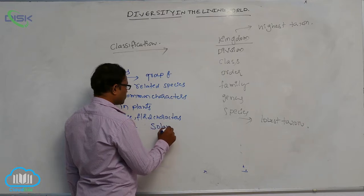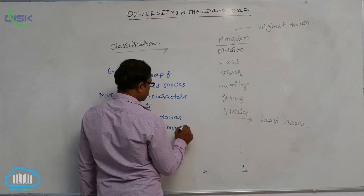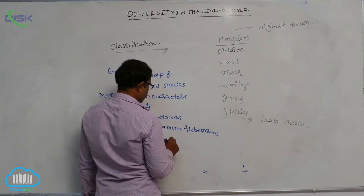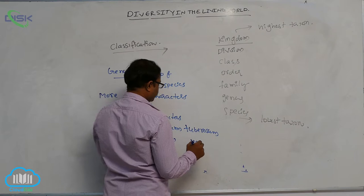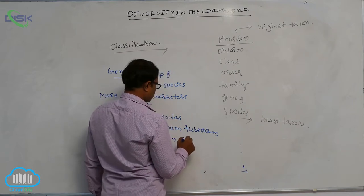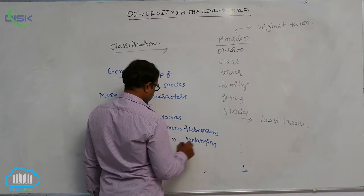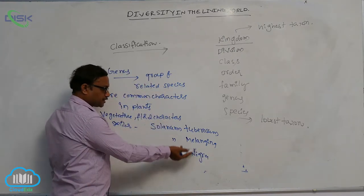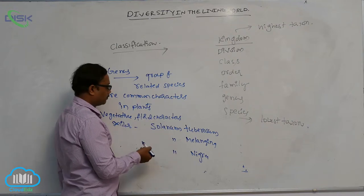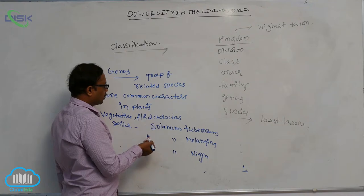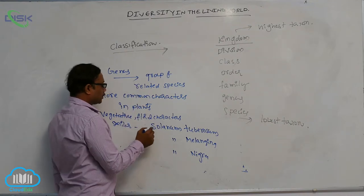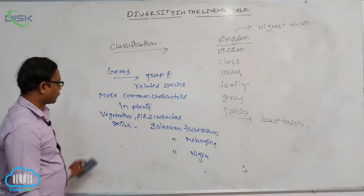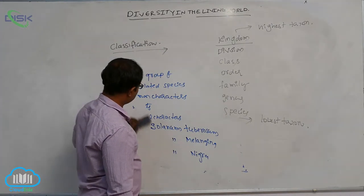For example, Solanum is a genus. Solanum tuberosum, Solanum melangena, Solanum nigra — in these, the species are different but the genus is the same. It means a group of related species belonging together is known as the genus. Both vegetative and floral characters are similar.